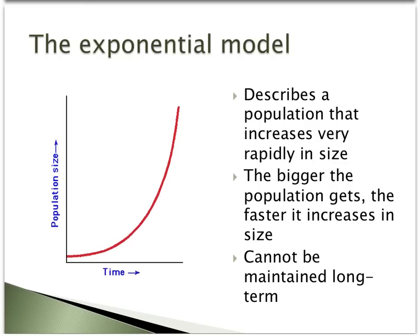There are two different models for population growth that both attempt to explain how a population can grow over a period of time if they have a positive growth rate. The exponential model describes how a population can grow in conditions where there are no limiting factors. While this model is not realistic long term, what is observed is a very rapid growth rate. The larger the population gets, the faster that it increases in size, as suggested by the greater and greater slope to the line provided in the picture to the left as time goes on.